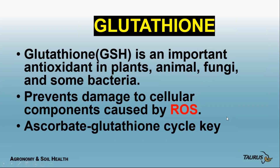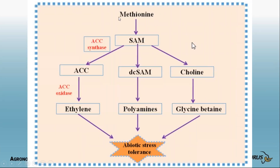The key process in the plant is the ascorbate-vitamin C-glutathione cycle, and that's the same in human beings. We need vitamin C and glutathione to scavenge free radicals — reactive oxygen species. Methionine and sulfur are key in producing ethylene, polyamines, and glycine betaine. Methionine is also key in the biosynthesis of many compounds in the plant including hormones like ethylene and some osmolytes. Remember, there are only five ingredients going to the plant — and then the plant produces the rest.